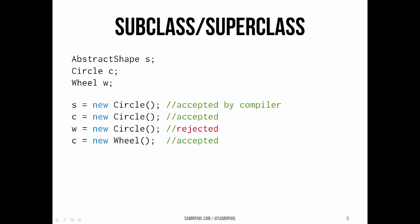When we point an abstract shape variable at a circle object, that's fine, because a circle is, in some sense, an abstract shape through that hierarchy. If we point a circle variable at a circle object, that works too. But if we point a wheel variable at a circle object, that doesn't work, because a circle is not necessarily a wheel. It works the other way — a wheel is a circle — but the inheritance hierarchy is a one-way relationship.